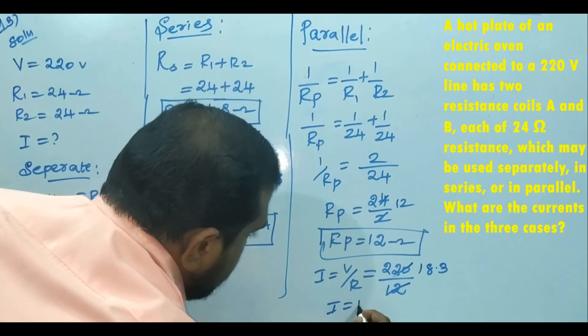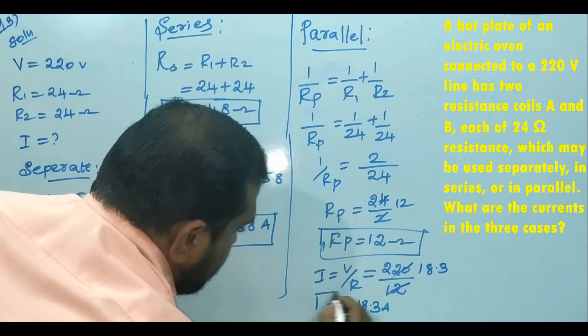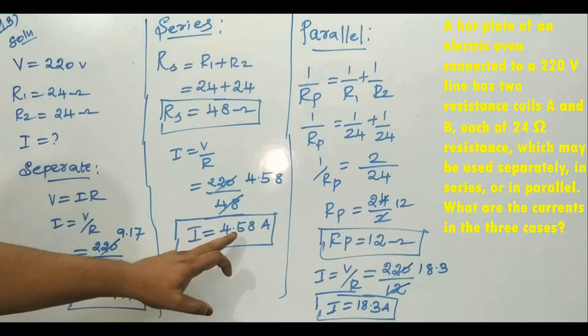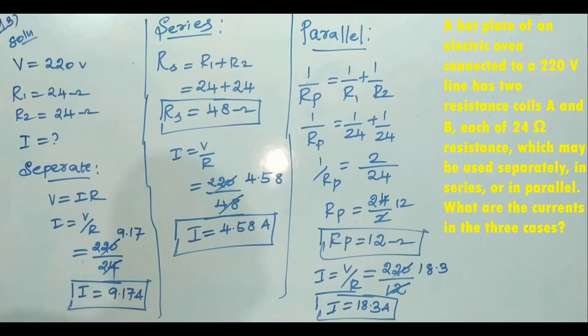This is the I value for the three cases: 9.17, 4.58, and 18.3 ampere.